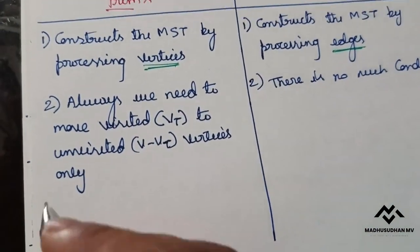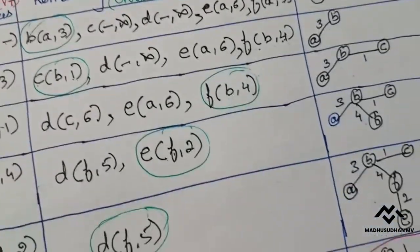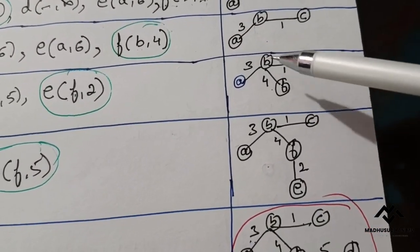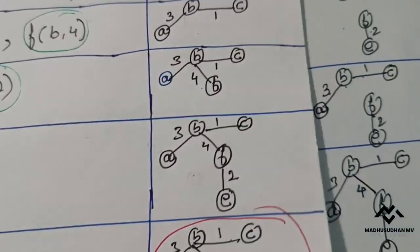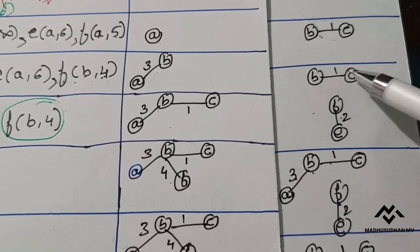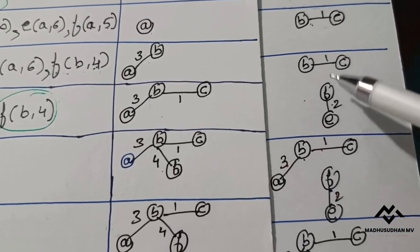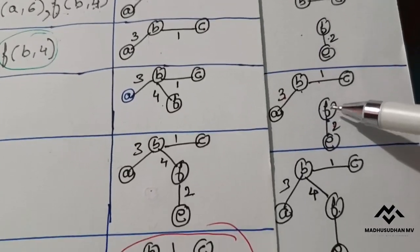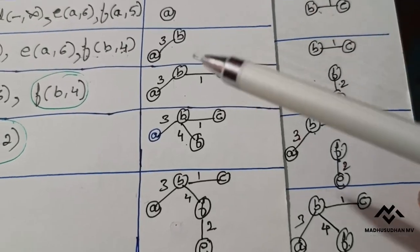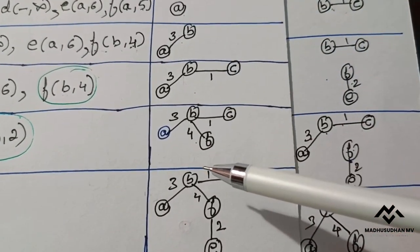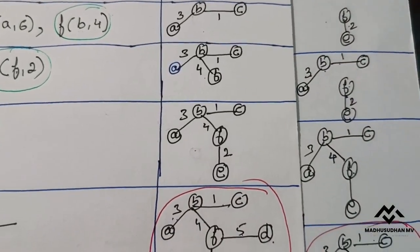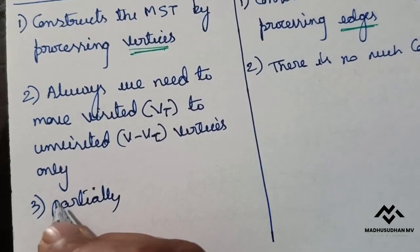The third difference: if you observe the partially constructed minimum spanning tree in Prim's algorithm, all the vertices are connected at every stage. But if you observe the illustration comparing Prim's and Kruskal's, in Prim's it is always connected, whereas in Kruskal's these two nodes are not connected to any other — it is a disconnected tree. So the partially constructed minimum spanning tree in Prim's should always be connected, whereas in Kruskal's it may or may not be connected.